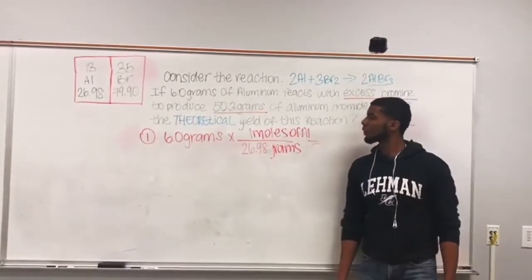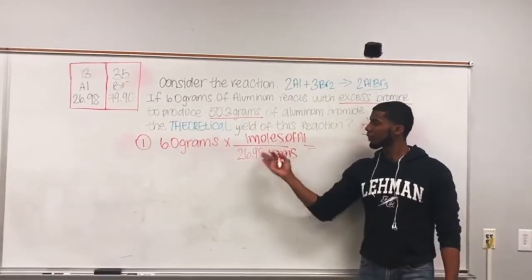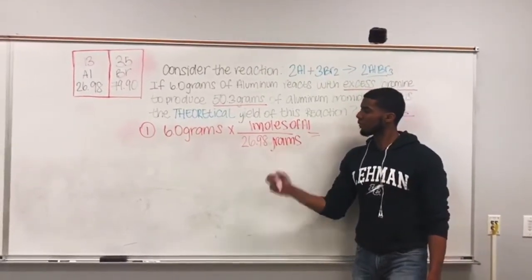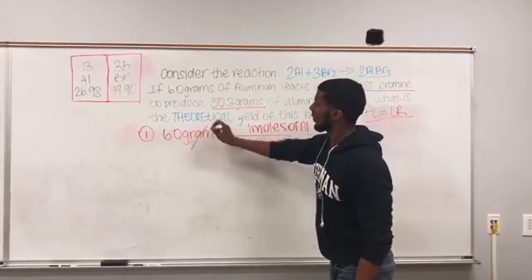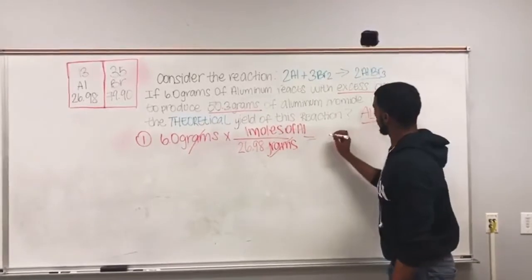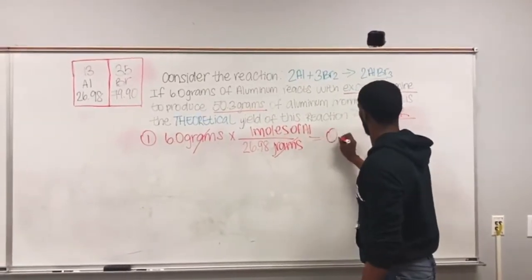The one mole will be on top and the molecular weight on the bottom. By doing this calculation, we cancel out grams and stay with moles of aluminum, which gives us 0.22 moles of Al.